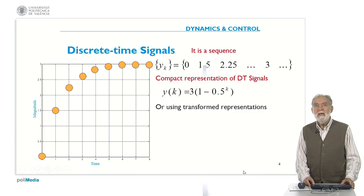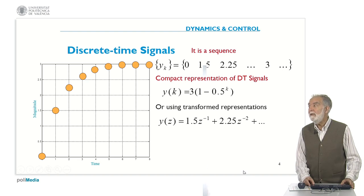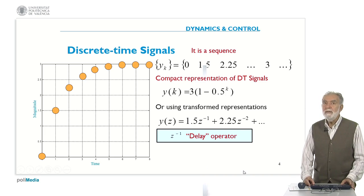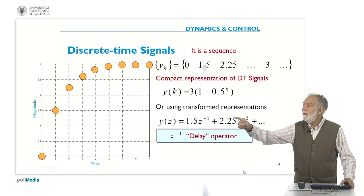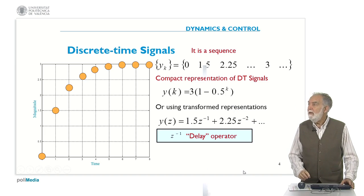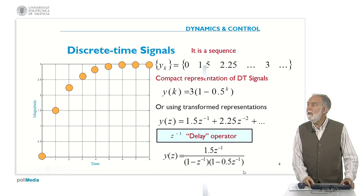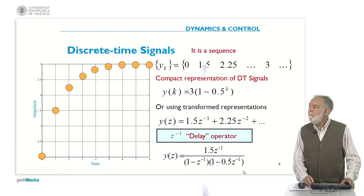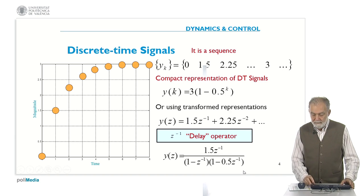Again, for discrete time signals, you can use the Z-transform, which is equivalent to the Laplace transform. And if you see in this expression, we are using what is called the delay operator. The delay operator z minus 1 expresses that y of z is equal to 0 plus 1.5 z minus 1, plus 2.25 z minus 2, because there are two delays, and so on. Then you have the Z-transform. In many cases this Z-transform can be summed, and then you get this compact expression. The number of parameters is limited — here there are only three or four parameters, whereas in the sequence you have an infinite number.